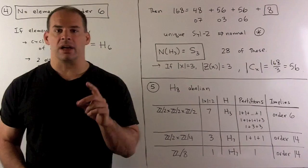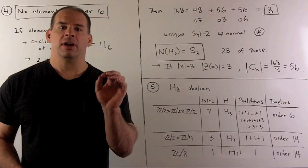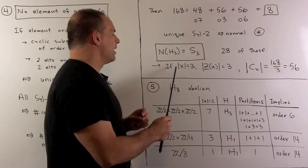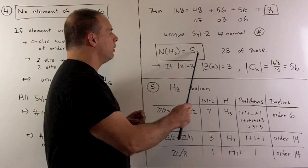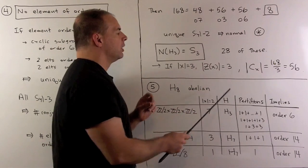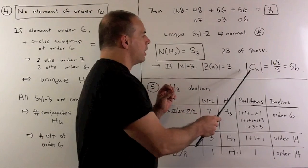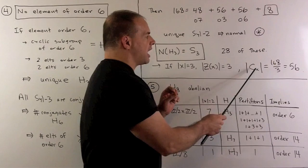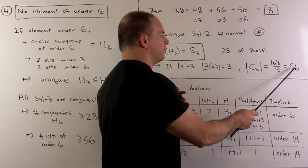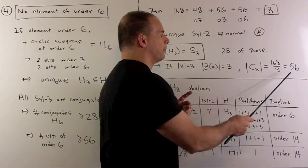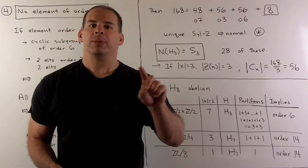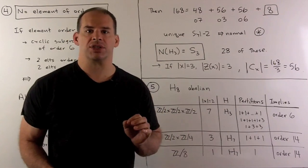Second consequence: if I have an element of order three, then we know its centralizer is going to have order three, which means the number of elements in its conjugacy class is 168 over three, which is 56. So, the elements of order three form a single conjugacy class.